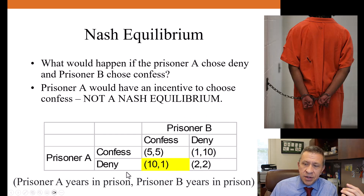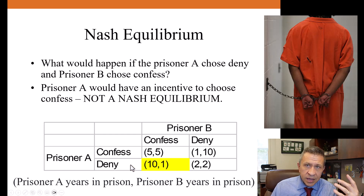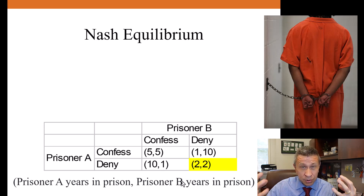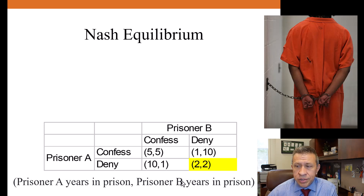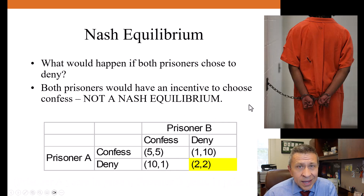The same holds for the opposite, where prisoner A denies and prisoner B confesses. In that case, prisoner A is getting 10 years, but if they were to confess they would only get five years — naturally there's an incentive to move away from denying to confessing. So prisoner A denying and prisoner B confessing is not a Nash Equilibrium. What about the outcome where they both deny? They each only get two years in prison — by far the lowest total prison time. But both prisoner A and prisoner B have an incentive, given what the other player is doing, to switch from denying to confessing, going from two years to one year. Therefore, both denying is not a Nash Equilibrium.